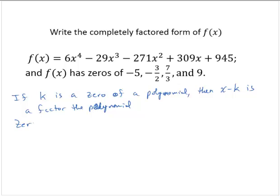So we have a zero. Let's compare the zero and the factors. A zero of negative 5 means we have a factor of x minus negative 5, which we will write as x plus 5.